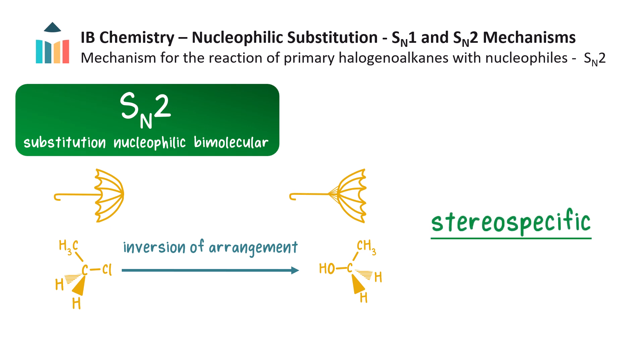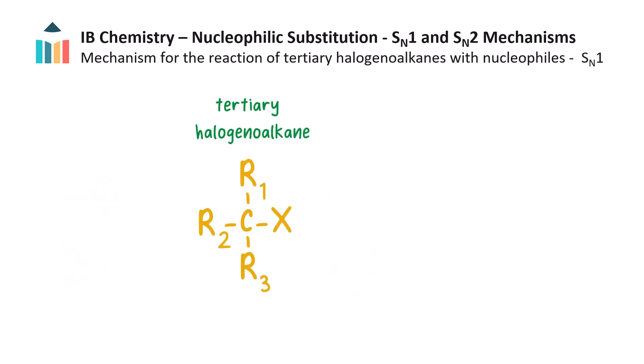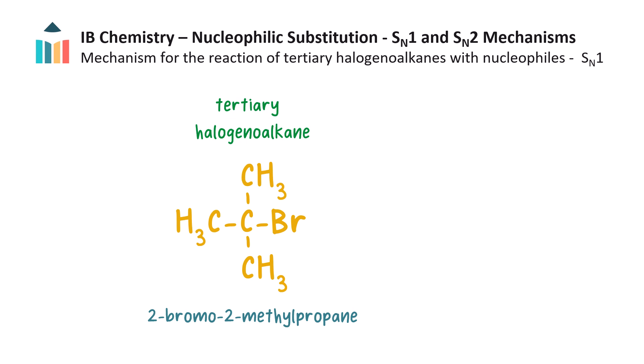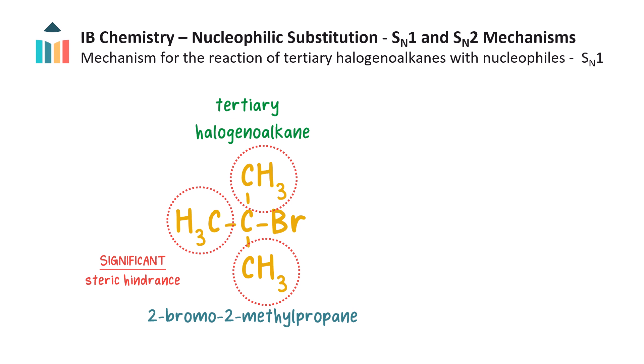Now that we know how primary halogeno alkanes undergo substitution reactions, let's turn our attention to tertiary halogeno alkanes. In a tertiary halogeno alkane, the carbon atom of the carbon-halogen bond has no hydrogens attached to it, but has three R groups — either alkyl or aryl groups — which may or may not be the same. If the three R groups are methyl groups, we get 2-bromo-2-methylpropane. The three alkyl groups are bulky and create a lot of steric hindrance around the electrophilic carbon. This hinders the attack of the electron deficient carbon by a nucleophile, so a concerted or one-step substitution cannot occur; instead a two-step mechanism occurs.